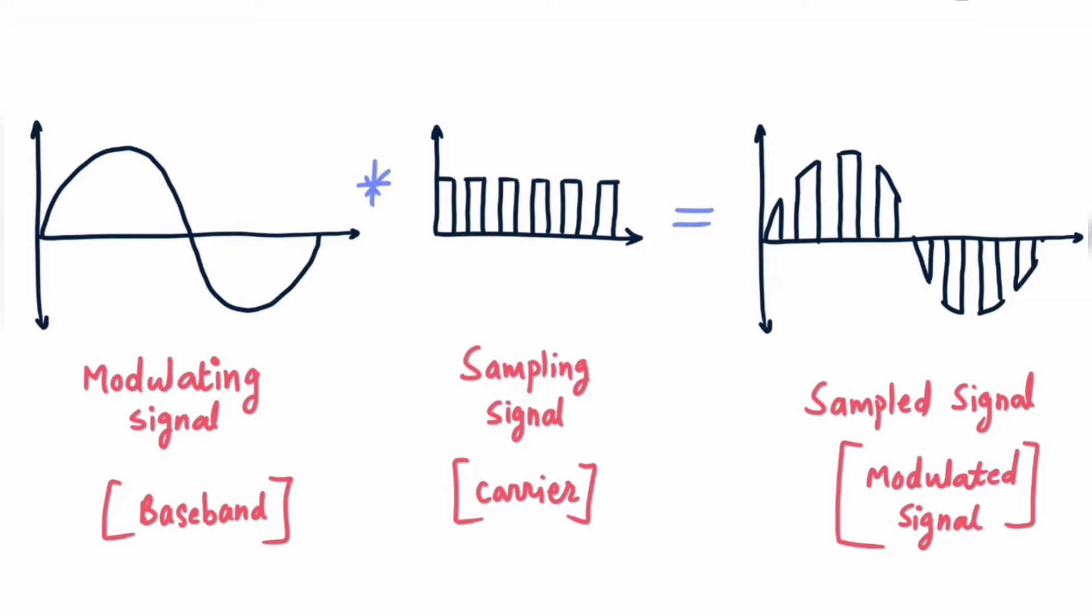Now this is the diagram of Pulse Amplitude Modulation, which means PAM. So in PAM, what happens? According to your modulating signal amplitude, your carrier signal will change.